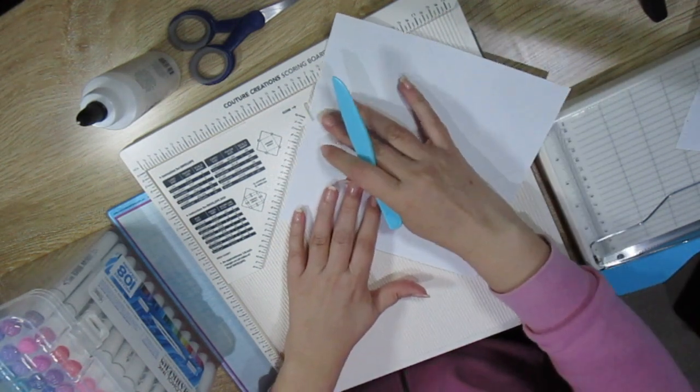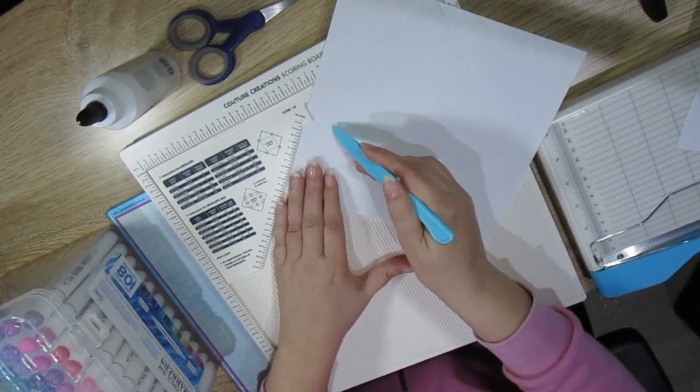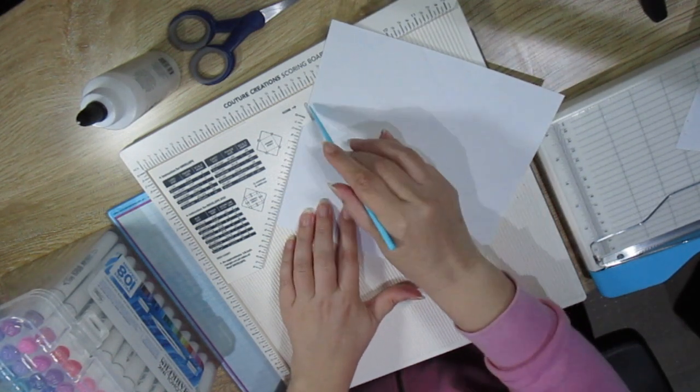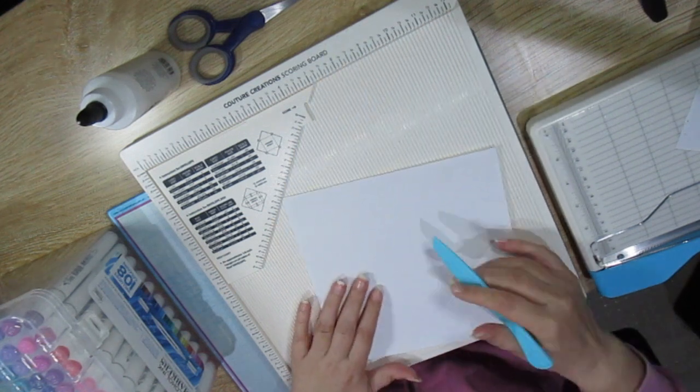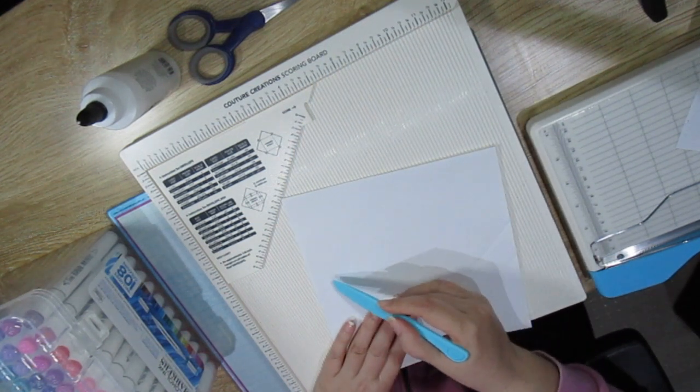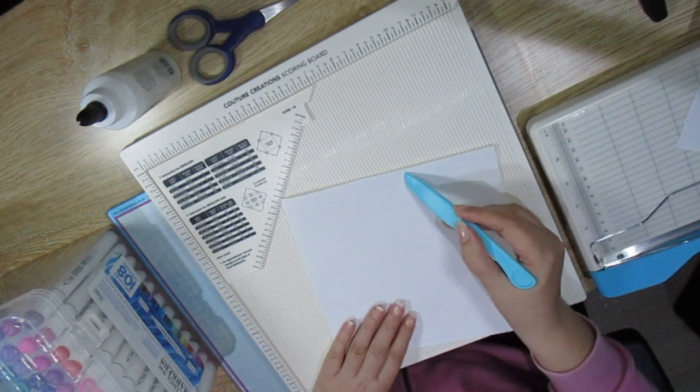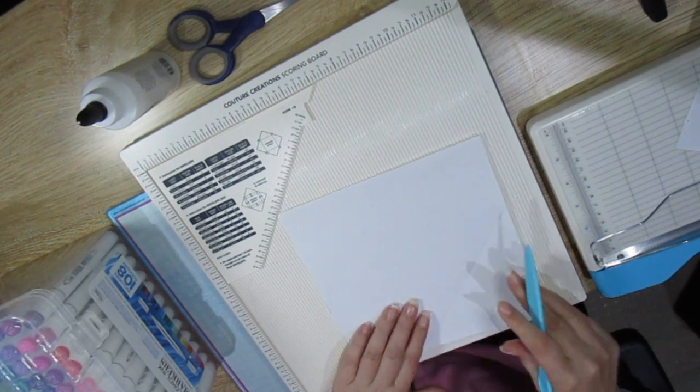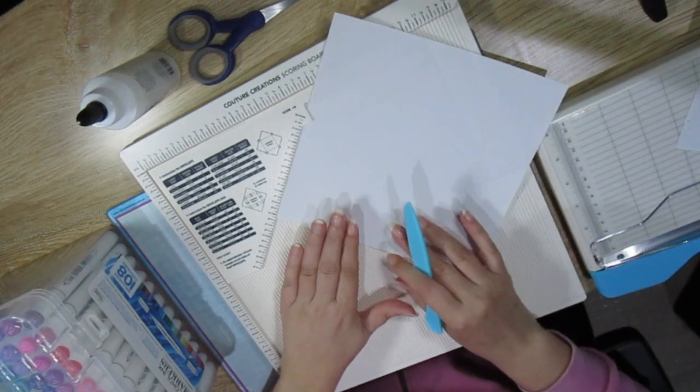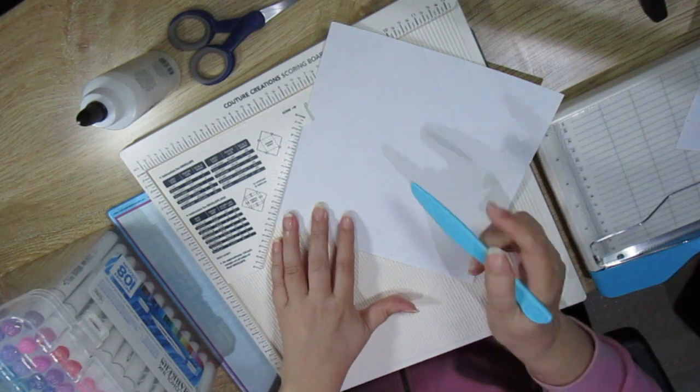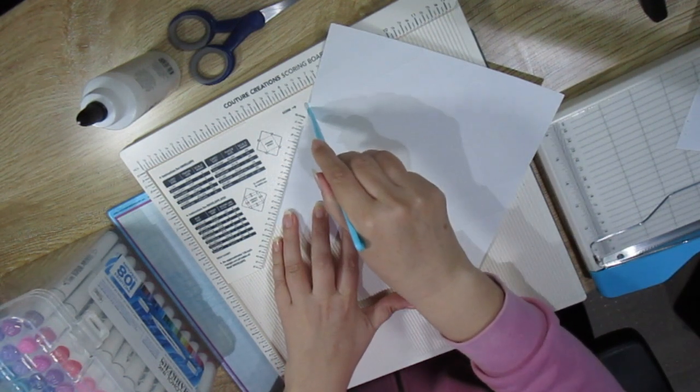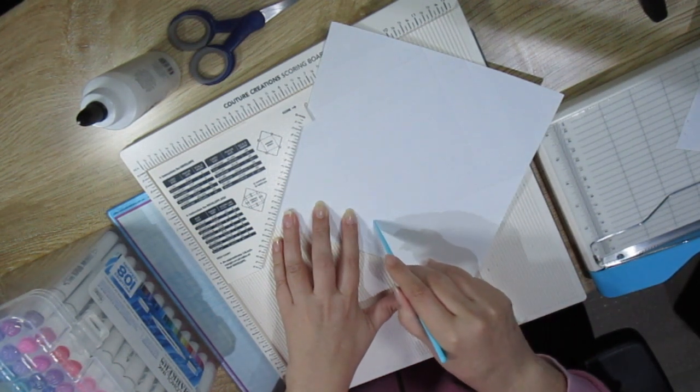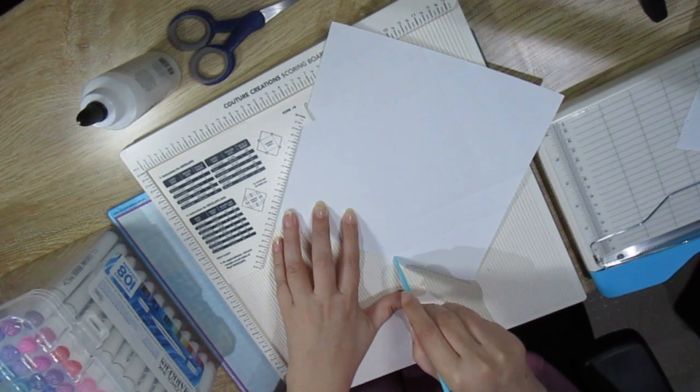Now on this side I don't want the score lines to go right through. I'm just scoring it up to this score line and this score line so that I can do some cutting. I will only move the cardstock to 4 and a half and then I'm scoring it up to that line. I'm just moving it lightly on the score line and then scoring it from the score line up to here.